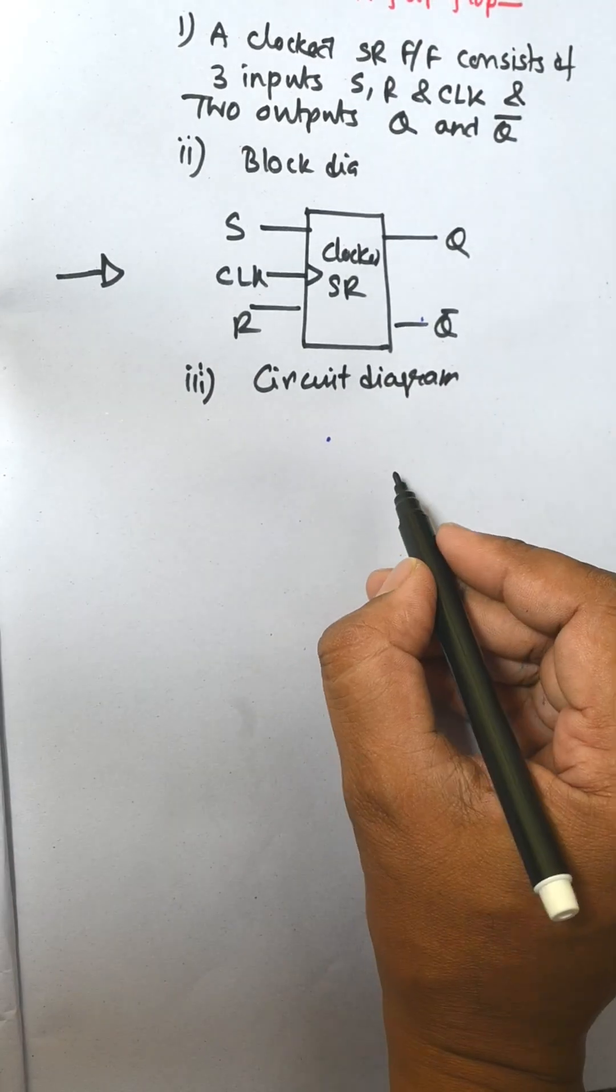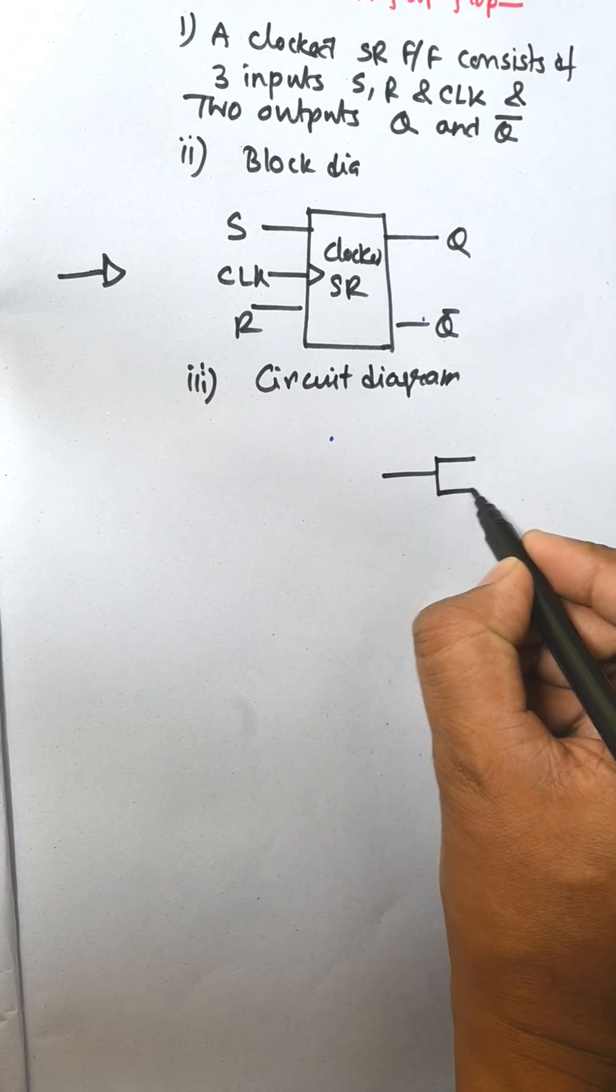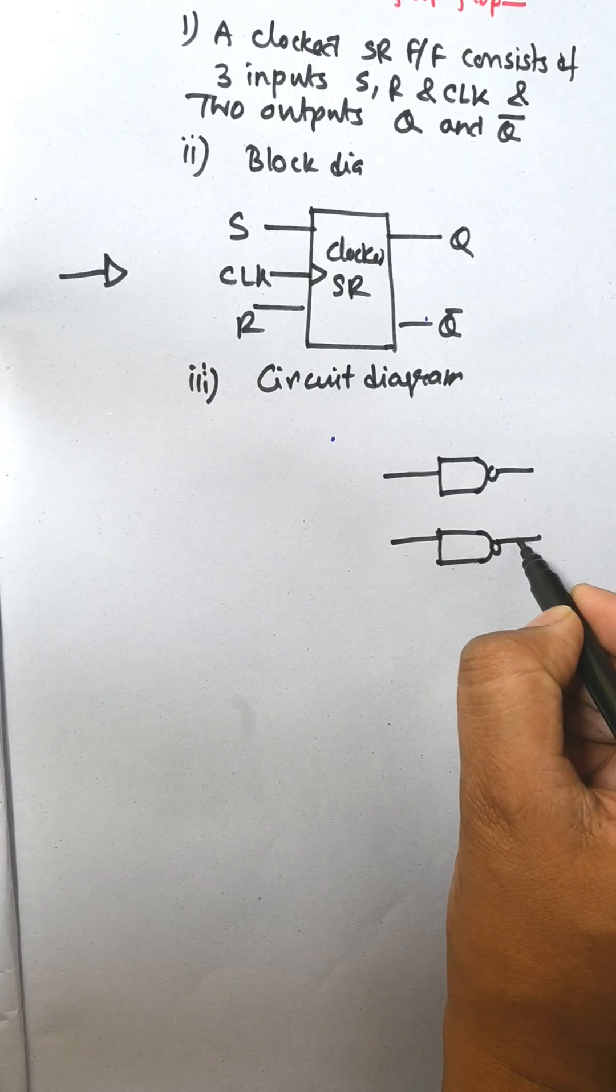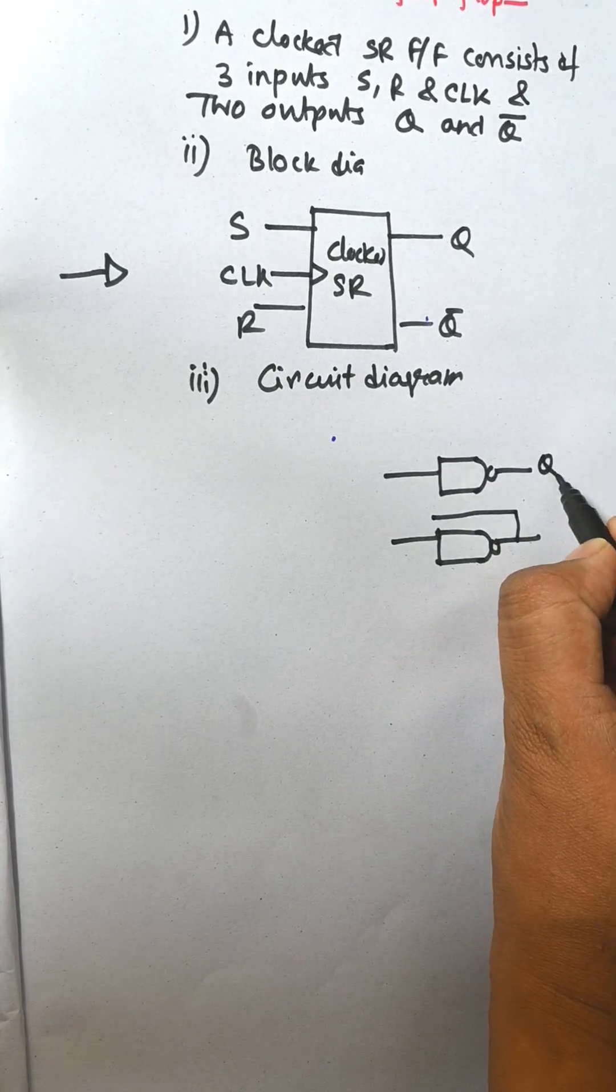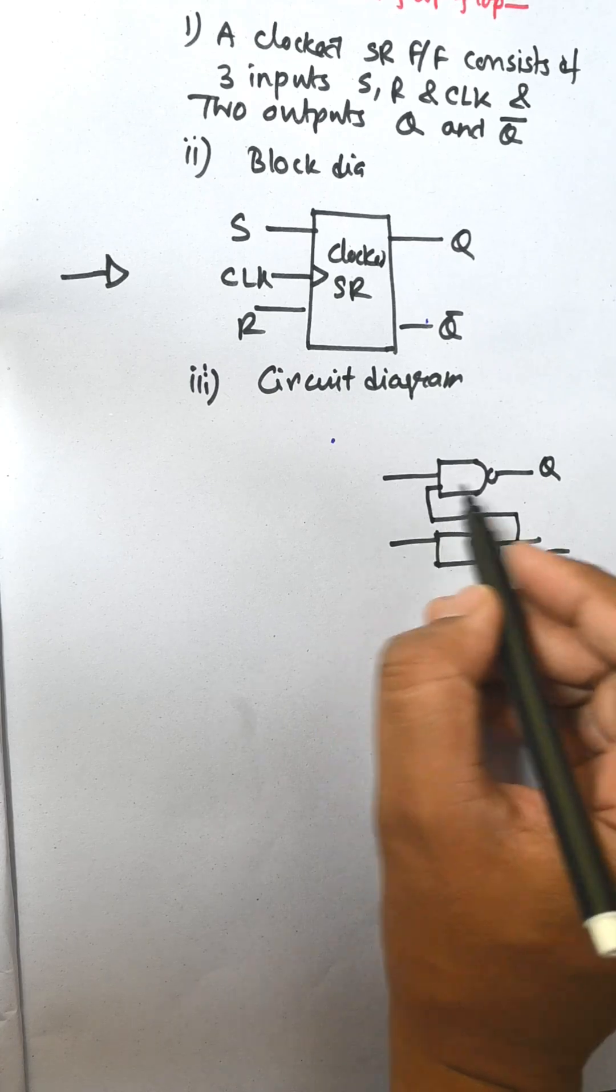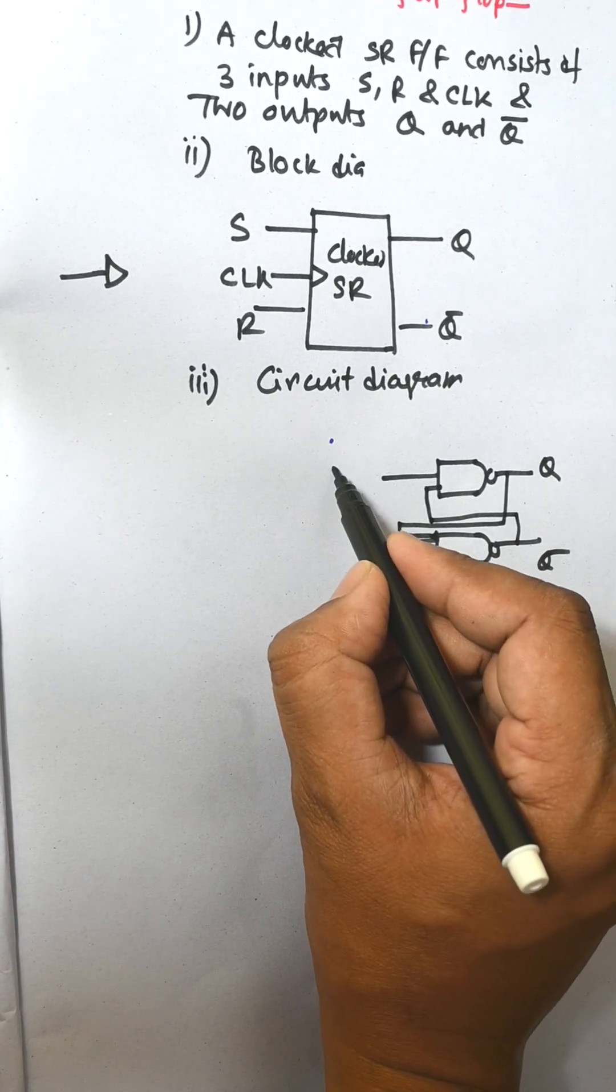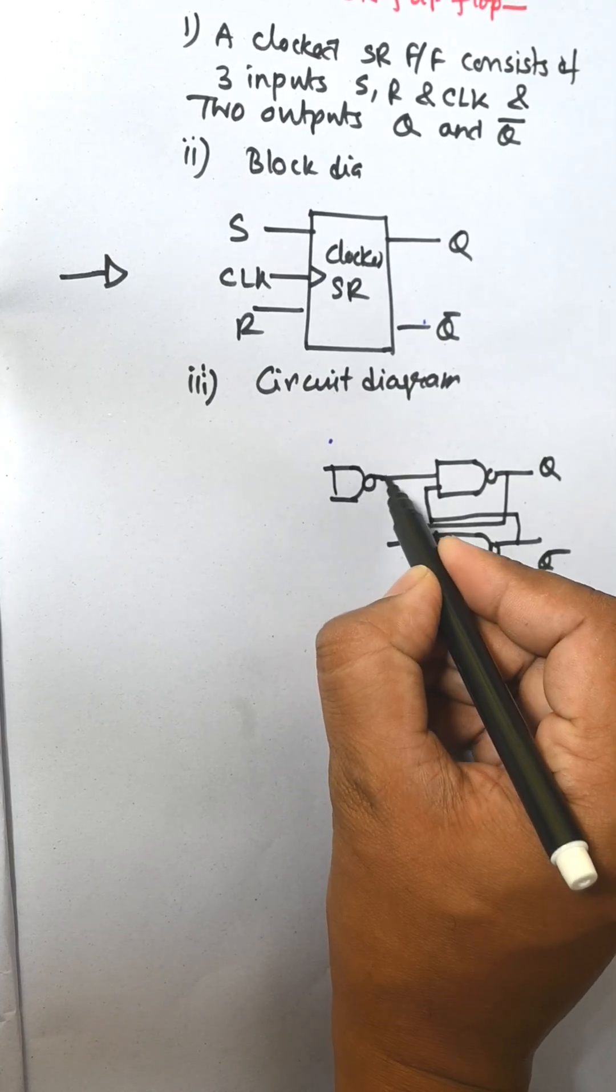First of all we need to draw the SR latch. This is a NAND gate based latch. This is Q and Q-bar. Q-bar is fed to S and Q is fed to Q-bar. And another NAND gate is used to provide CLK and input.